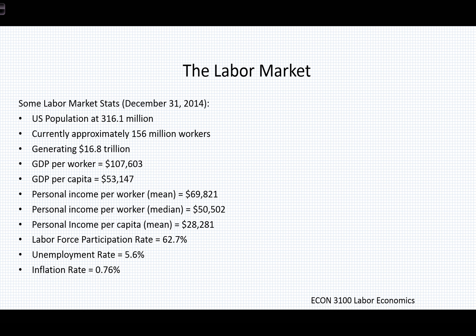You might also think about the difference between personal income per worker at the mean versus the median — there's about a $20,000 difference, which may also tell us something about inequality. The average worker, including all upper-income and lower-income workers, earns almost $70,000, but the median worker — John Q. Public, if you will — earns only a little over $50,000. When we think about this further, we see a mean personal income per capita of approximately $28,100, which makes sense given the other relationships we've established.